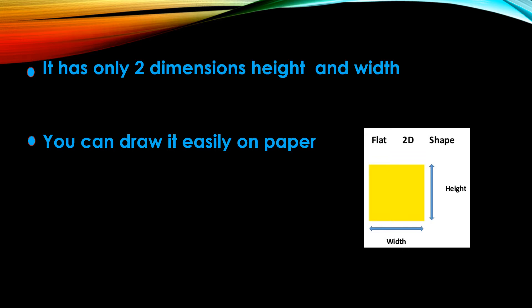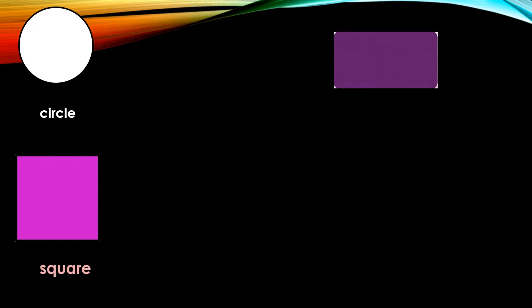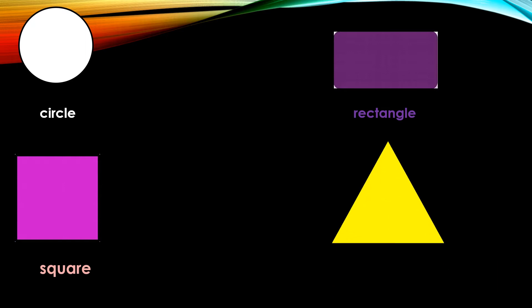What's this? It's a circle. Yes, circle! This is a square. Square. Rectangle. Rectangle. And the last one is triangle. Supers! So I have circle, square, rectangle, and triangle.